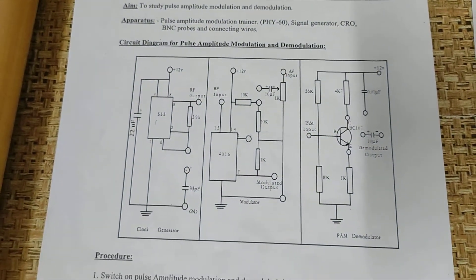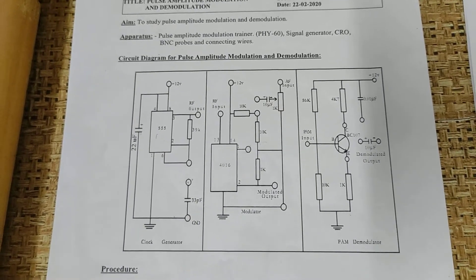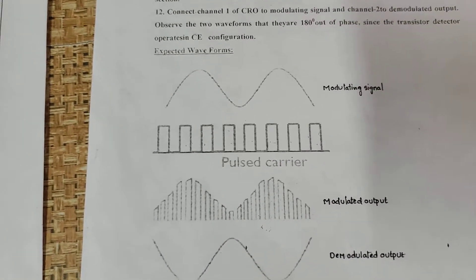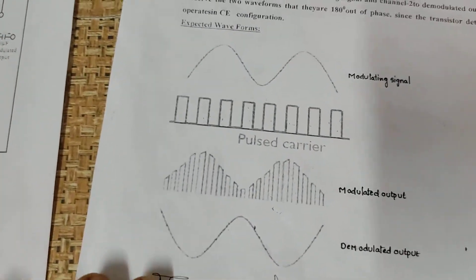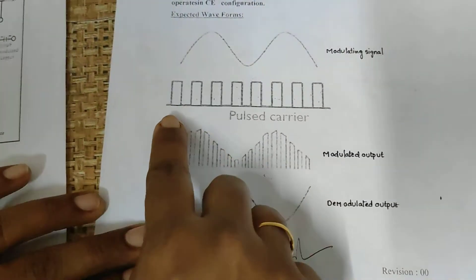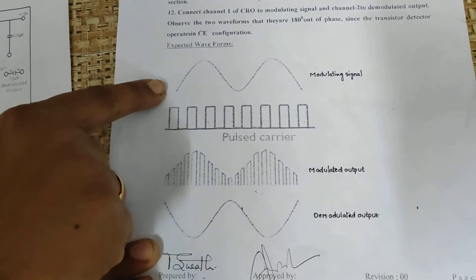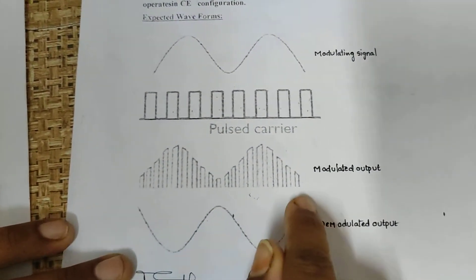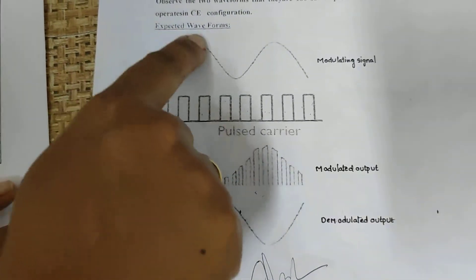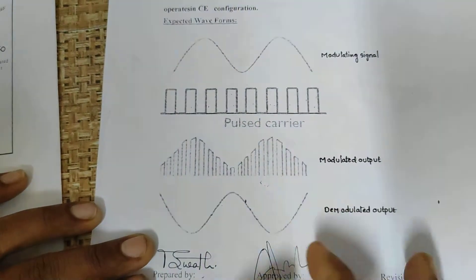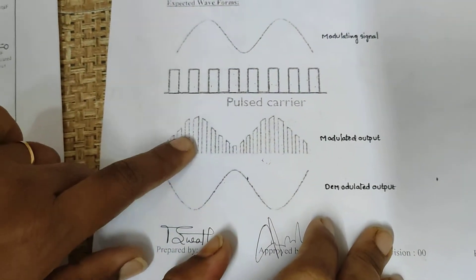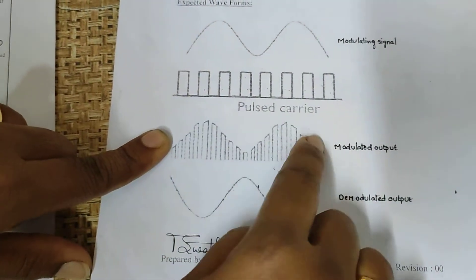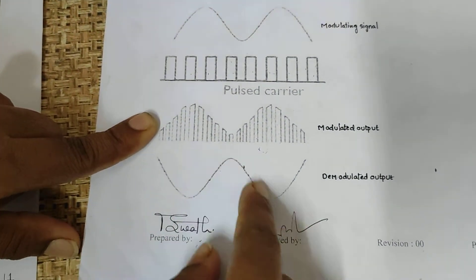Pulse Amplitude Modulation is a pulse analog modulation scheme in which amplitude of the pulse waveform is modified or varied in accordance with the message amplitude variations. The sample output appears like this. Here our carrier is a pulse waveform, and we are taking a sinusoidal input modulating signal. The amplitude of this pulse waveform is varied in accordance with the amplitude variations of your modulating signal. The envelope of the PAM signal now resembles your message amplitude variations. So if at the receiving end you extract the envelope of the PAM signal, then it is enough to recover the message signal.